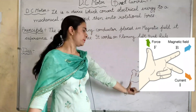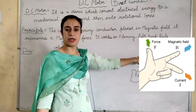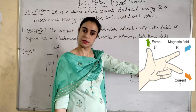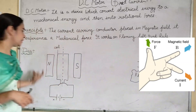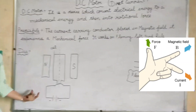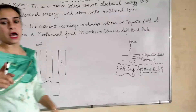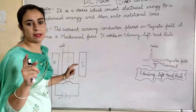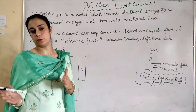The diagram is shown here with the thumb finger, index finger, and middle finger. In the diagram, we have shown two magnetic fields — two poles: one North Pole and one South Pole.